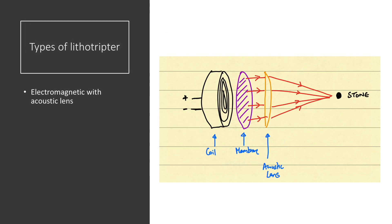The second type of shockwave generator is an electromagnetic device. It relies on the physical principle that when current flows into a metal coil, it induces a magnetic field. If a metallic membrane is placed in close proximity to the coil and the coil is excited by a short electrical pulse, the plate experiences a repulsive magnetic force, generating an acoustic shockwave. If the membrane is flat, the resulting acoustic wave is a planar wave, which can be focused by means of an acoustic lens, as you can see in the first diagram.